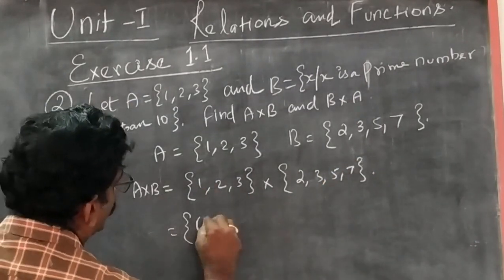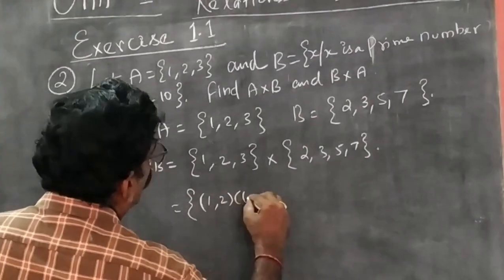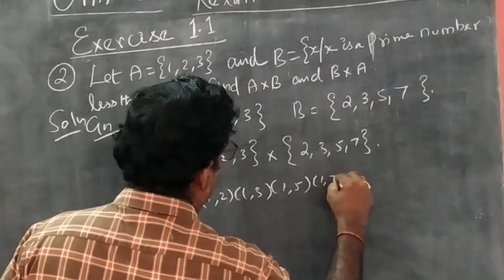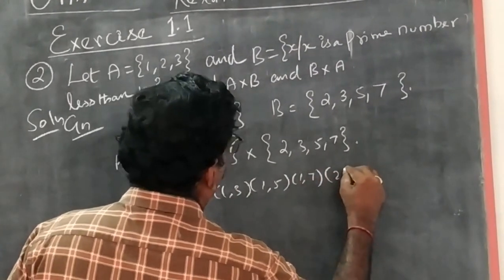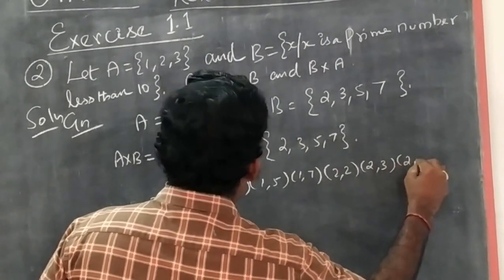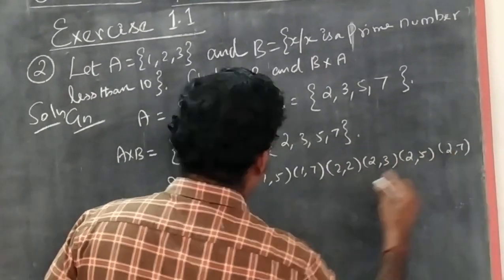A×B = {(1,2), (1,3), (1,5), (1,7), (2,2), (2,3), (2,5), (2,7), (3,2), (3,5), (3,7)}.